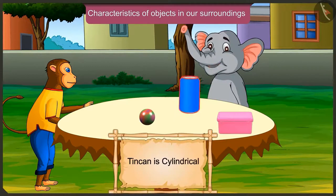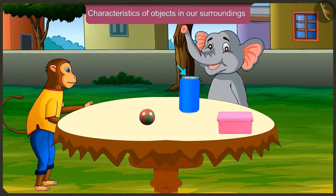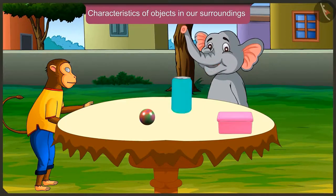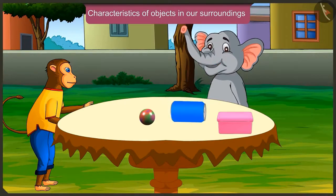And as you can see, this tin can is cylindrical. Cylindrical objects have a flat surface on top and also on bottom. That's why we can slide them. But since the surface is curved, we can also roll them like this.